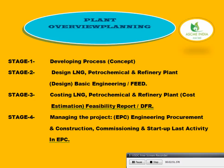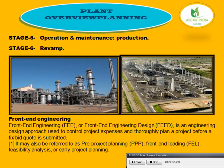Plant overview planning. We have five phases. First stage: developing the process concept. Second stage: designing the LNG petrochemical and refinery plant — design basic engineering FEED. Third: costing the LNG petrochemical and refinery plant — estimation feasibility report, DFR. Fourth: managing the project — EPC, engineering procurement and construction, commissioning and start-up as the last activity in EPC.